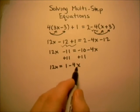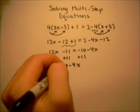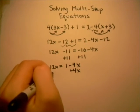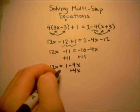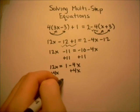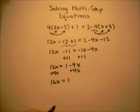So we want to get all the x's on the left-hand side now, so we'll just add 4x to both sides. And that gives us, on the left-hand side, 16x. And on the right-hand side, the 4x and the negative 4x cancel, and so that equals 1.